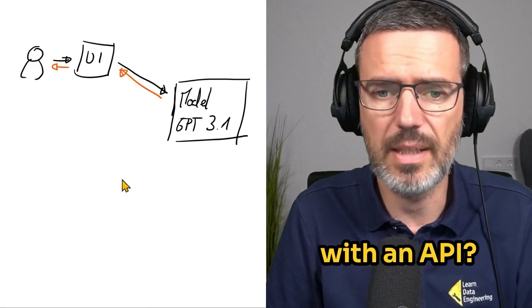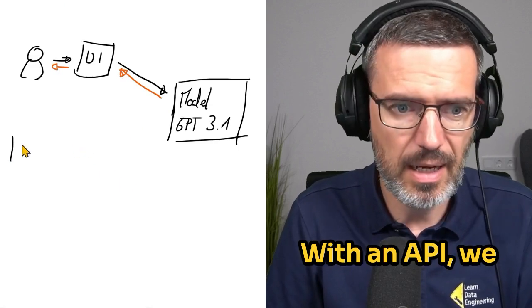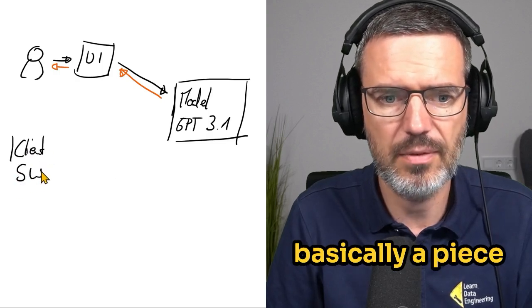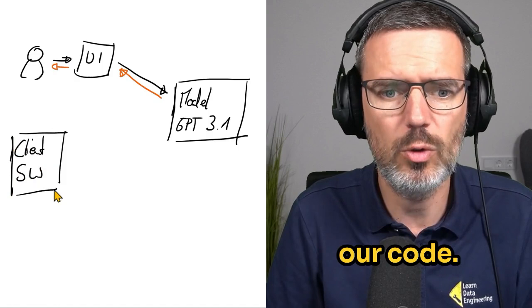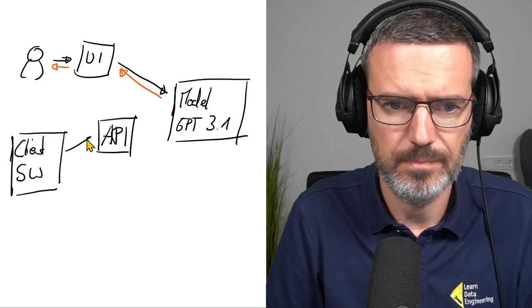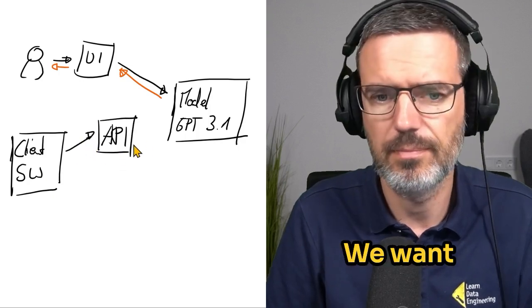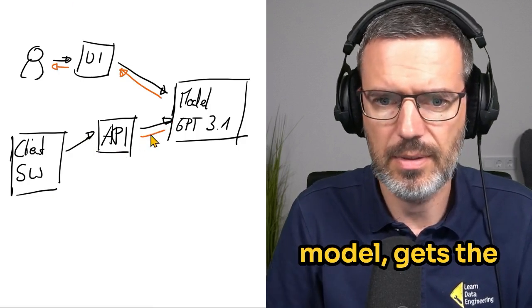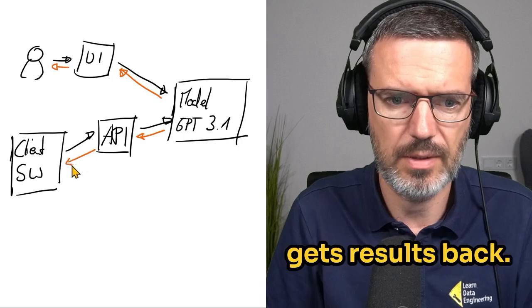Now, how does this work with an API? With an API, we have a client here, and that is basically a piece of software, our code, and that code asks the API. Here, we want some data. API asks the model, gets the results back, gets the results back.